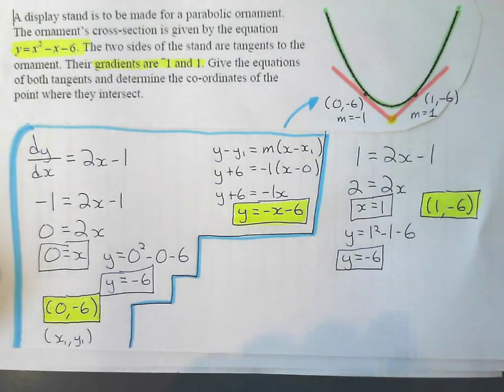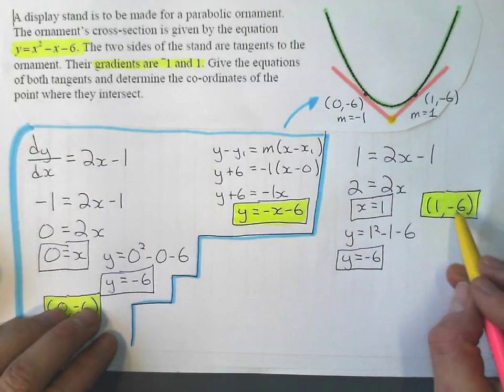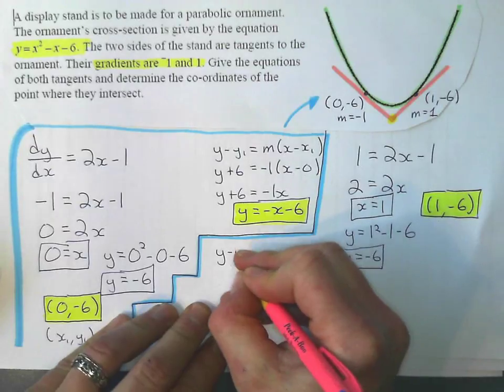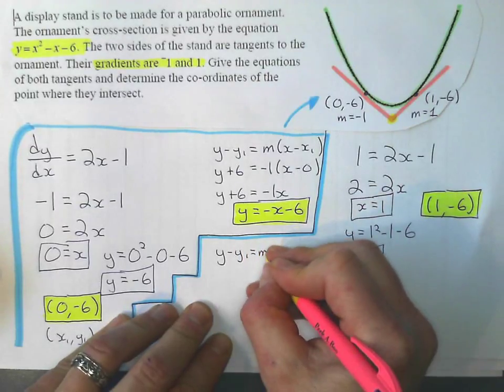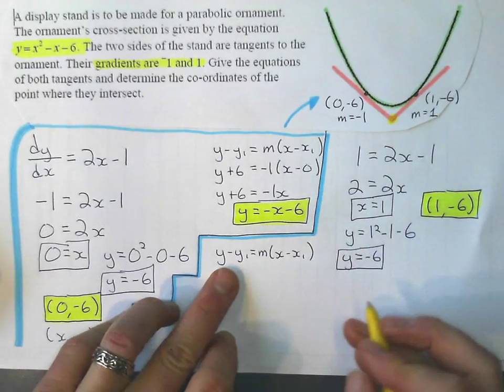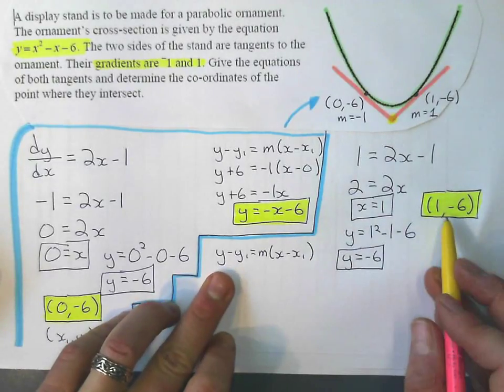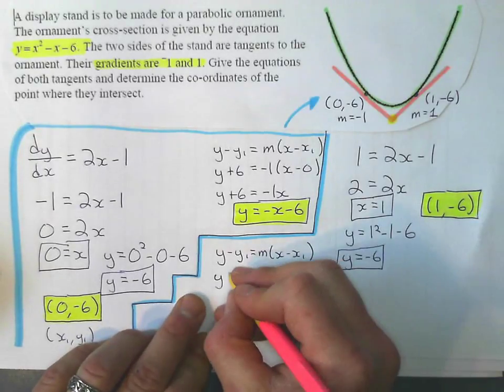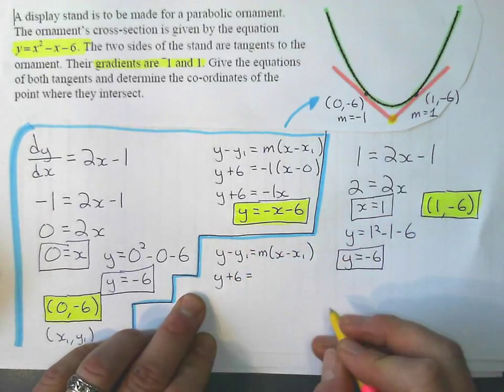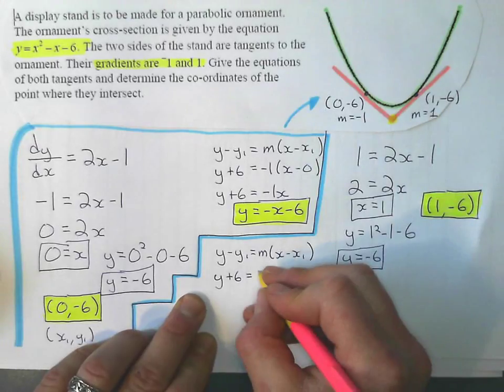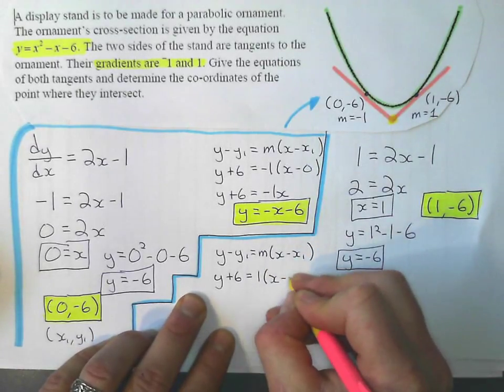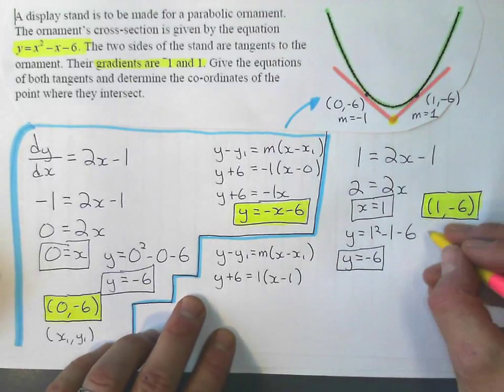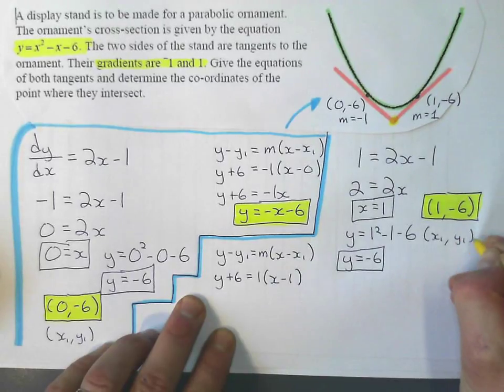Now I'm ready to write the equation for this one. I've got my coordinate. I've got my gradient. We've got my general formula: y - y₁ = m(x - x₁). Remember, here's my coordinate. So just like the other one, y minus the negative 6 is y + 6. And my gradient is positive 1. Minus 1. Remember, that's x₁ and that's y₁.